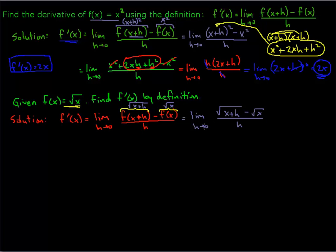Now, this expression — if we wanted to substitute h equals 0 immediately, that's a problem. We can't put 0 in the denominator. So we want to do the same basic thing as in the first example: get a common factor of h in the numerator to cancel with the h in the denominator. But in order to do that, we're going to use a trick: we're going to multiply by the conjugate to rationalize the numerator. And the conjugate is the square root of x plus h plus the square root of x.